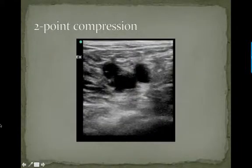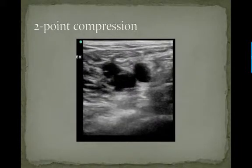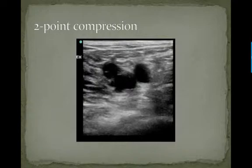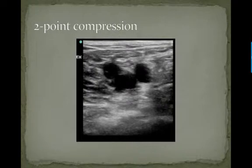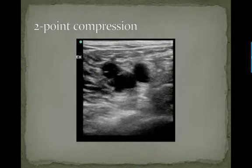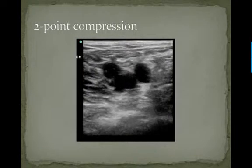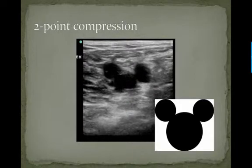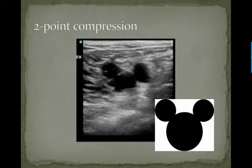Here's an example of the common femoral vessels by ultrasound. This is where the greater saphenous is joining the common femoral vein, and we can see the femoral artery. This triad is often said to resemble a Mickey Mouse head.